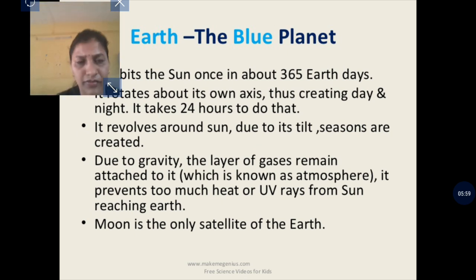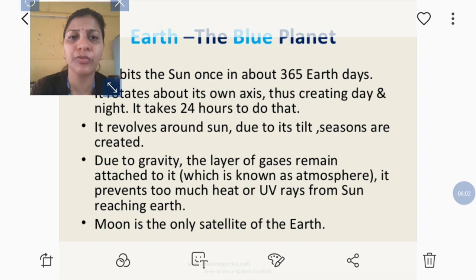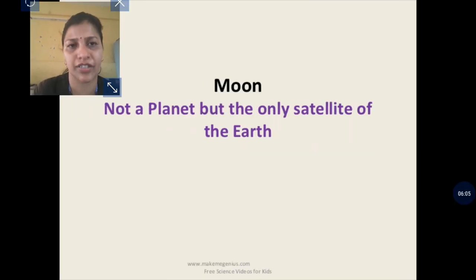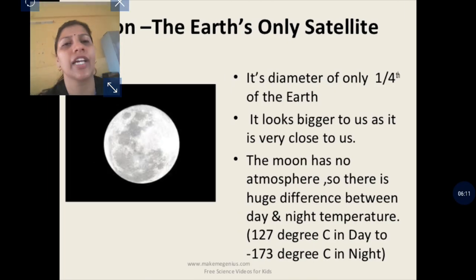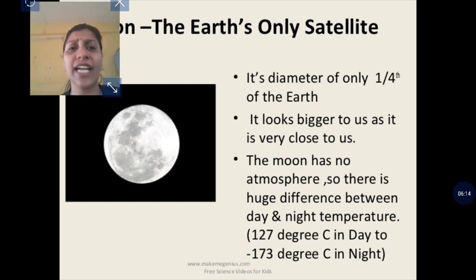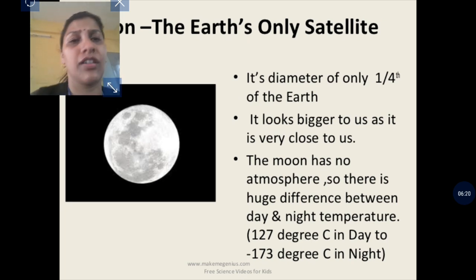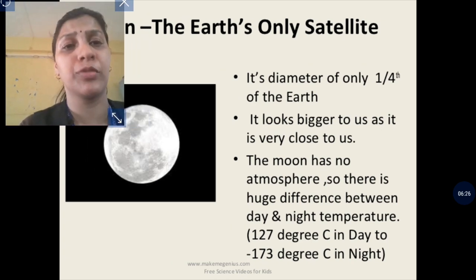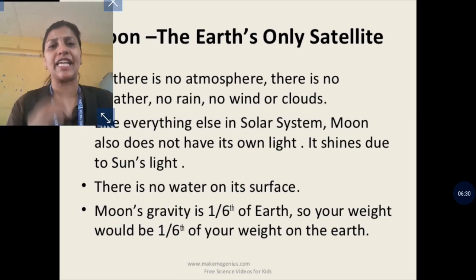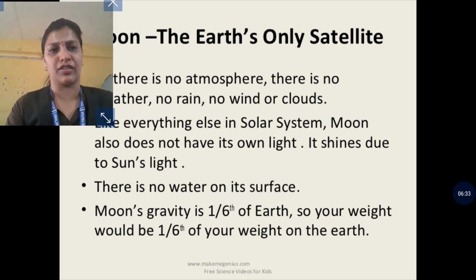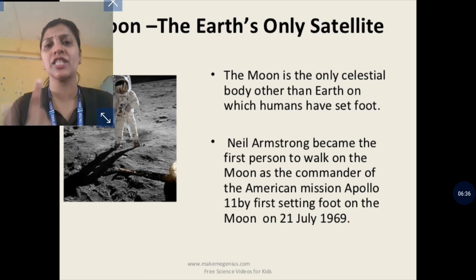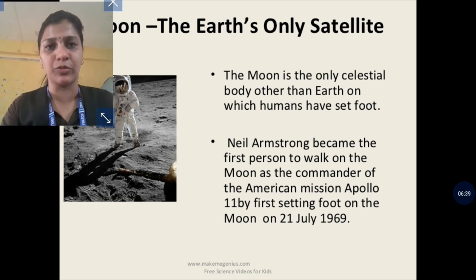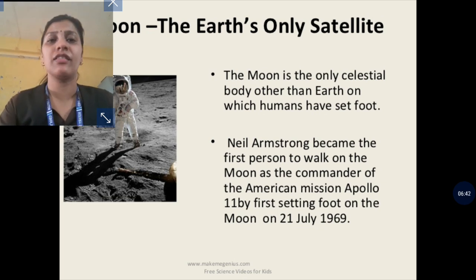Earth has its own gravity. Earth has one satellite — the Moon. The Moon is not a planet; it is a satellite of Earth. The Moon has no atmosphere, so if we speak on the Moon we are unable to hear. Its gravity is one-sixth that of Earth. The first man to step on the Moon was Neil Armstrong.